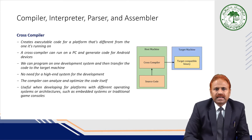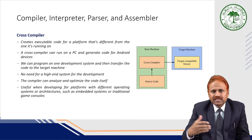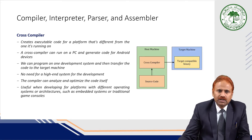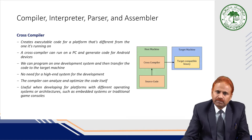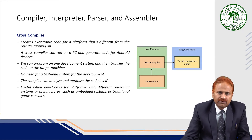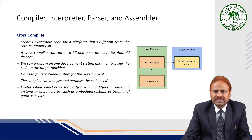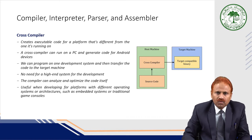We can program on one development system and then transfer the code to the target machine — no need for a high-end system for development. The compiler can analyze and optimize the code itself. It is useful when developing for platforms with different operating systems or architectures, such as embedded systems or traditional game consoles.